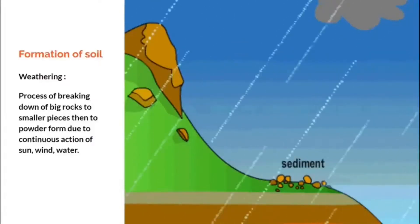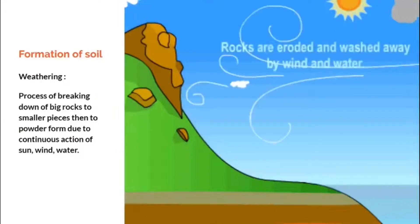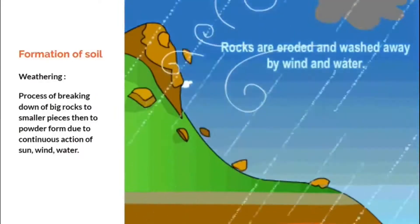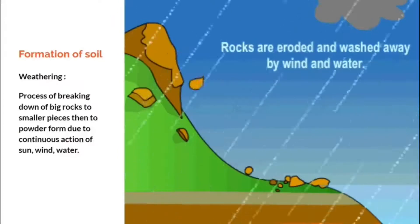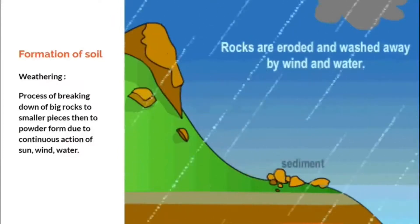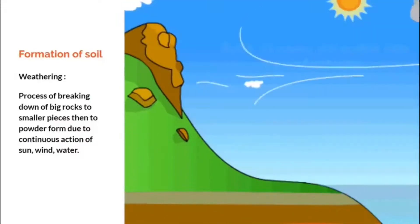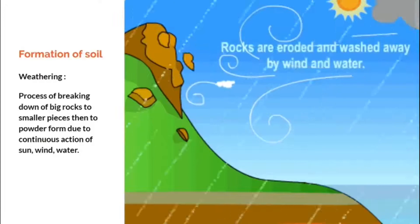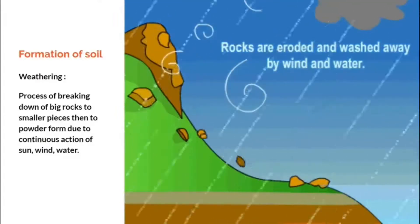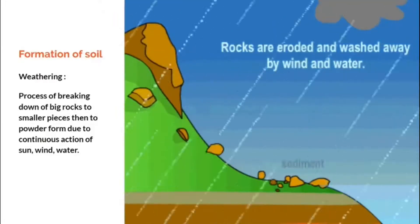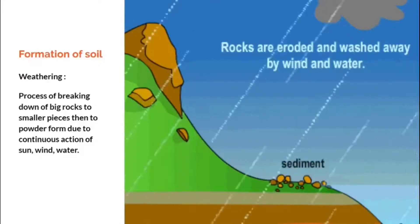Now we are going to learn how soil is formed. The formation of soil takes place through a process called weathering. Weathering is the process of breaking down of big rocks into smaller pieces, then to powder form, due to the continuous action of sun, wind, and water.